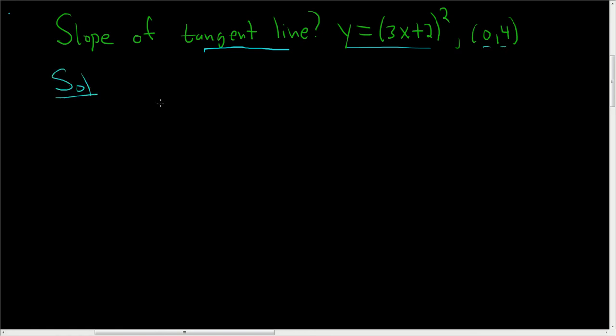Recall that the derivative of a function at x is the slope at x. So in this case, what we'll do is we'll take the derivative of y and plug in 0. That's it.